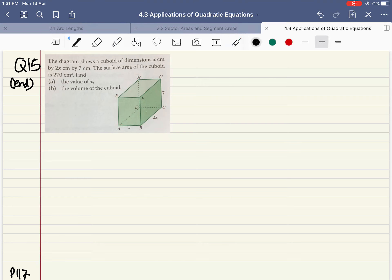So the surface area, I will say x by 2x multiplied by 2, because there are two of these surfaces. Then we also have 7 by x, there are two of these surfaces. And also the last one, I have 7 by 2x, there are two of these surfaces, and the total surface area is 270 cm squared.